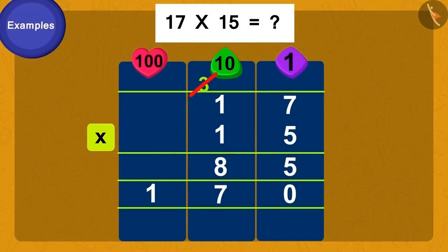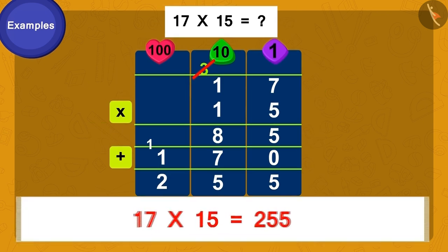Now it's very easy. Simply add 170 to 85. What do we get? 255. Doing this we get our answer. 17 times 15 is 255.